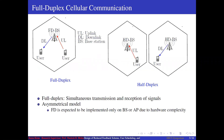Full duplex is one of the candidate technologies considered for next generation wireless communication systems. It enables simultaneous transmission and reception of signals over the same bandwidth. Full duplex is expected to be implemented only on advanced transceivers such as the base station and access points in WLAN, due to its hardware complexity and cost involved.